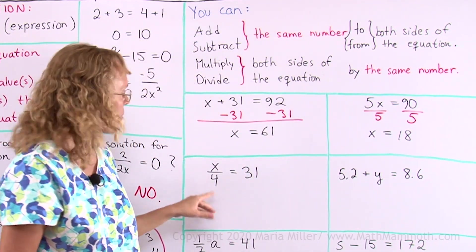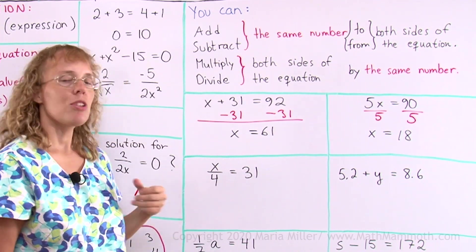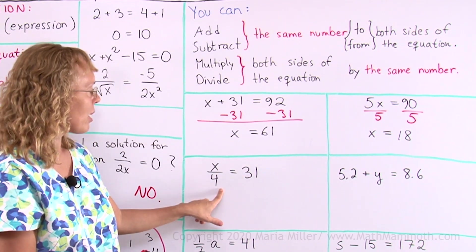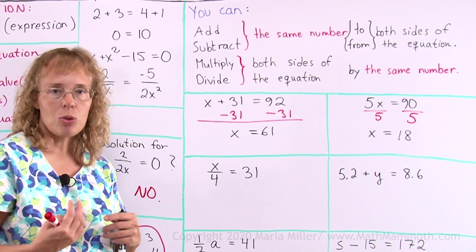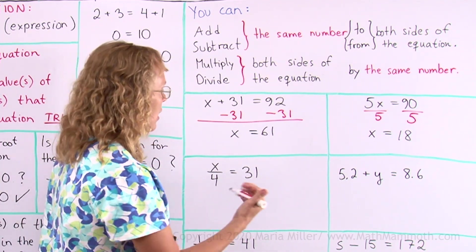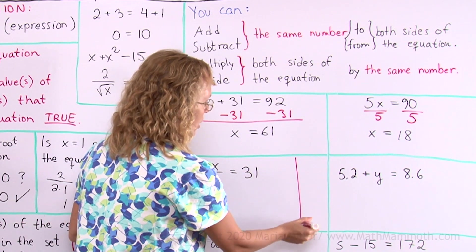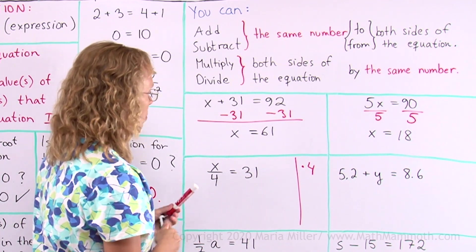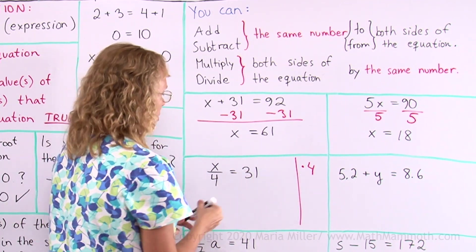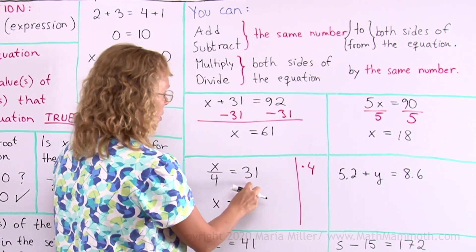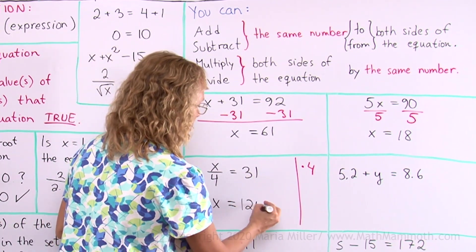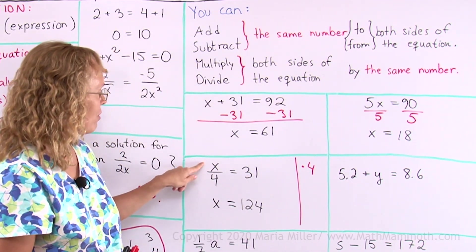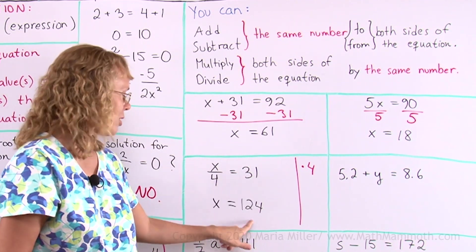This is a division equation. x is divided by some number. So we use the opposite operation. We use multiplication to solve it. And we multiply both sides by 4. I'll show you another way to notate this. Another way to write it down. And that is that I have like a marginal notes here. And over here, I write what I'm going to do. I'm going to multiply both sides by 4. And then I apply that. x divided by 4 times 4 leaves me x alone. And then 31 times 4 is 124. And then I can again check it. Is 124 divided by 4 really 31? Yes. So the equation checks.